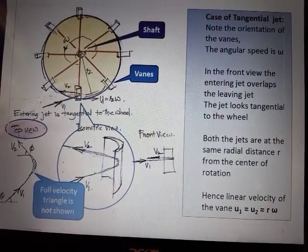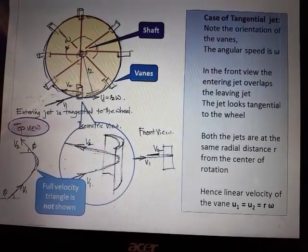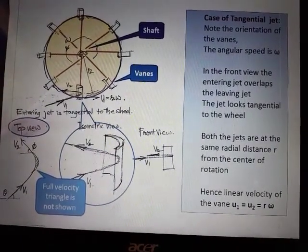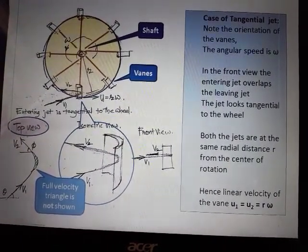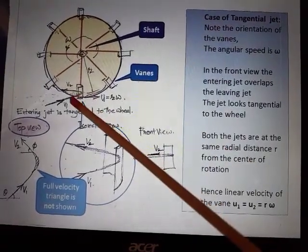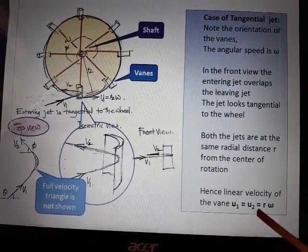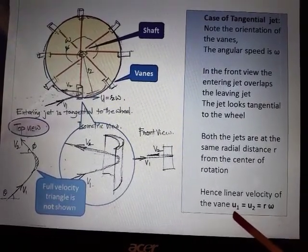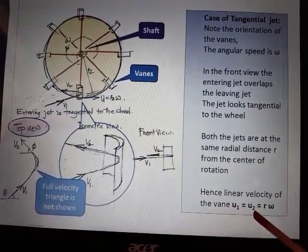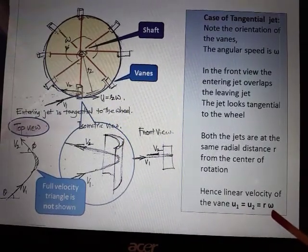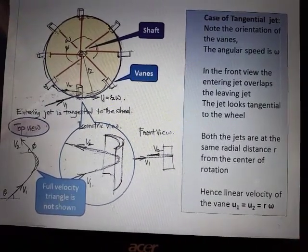So here already we have seen that in tangential flow, the entry point and exit point of the jet remains at the same radial distance. Because of that, u1 and u2 - that is velocity of the vane at the inlet point and velocity of the vane at the outlet point - remains the same, that is r*omega.